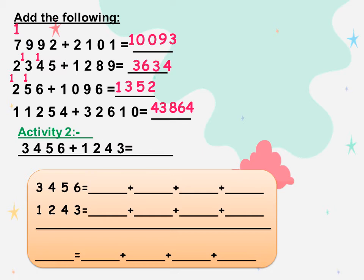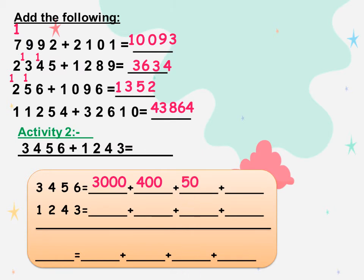Now: 3,456 plus 1,243. We want to convert 3,456 to values. Digit 3 is 3,000, so we add three zeros. Digit 4 is 400, so we add two zeros. Digit 5 is 50, so we add one zero. And digit 6 is 1, so we write 6 without any zeros.